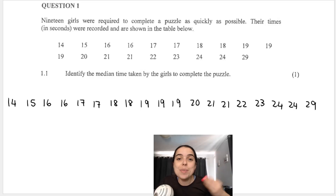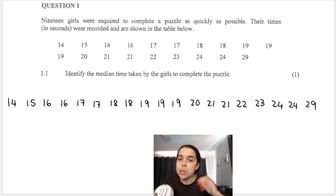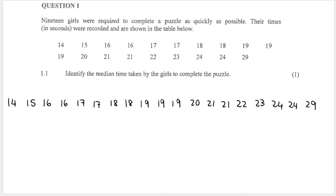There are different ways to determine the median. Remember, median is middle. One way is the cross-out method. What I mean by this is we start on either end of the data set and we cross out — going two at a time since it's faster — making our way towards the middle to see which data point is in the middle.